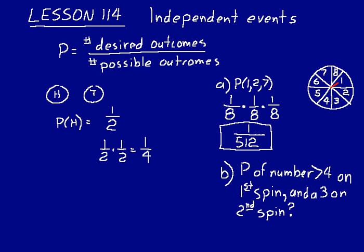Let's try another one. What is the probability of getting a number greater than four on the first spin and a three on the second spin? So these are independent events. That first event, we want to try to get a number greater than four. So that would be like a five, a six, a seven, or an eight. Four desired outcomes over eight possible multiplied by a three on the second spin.